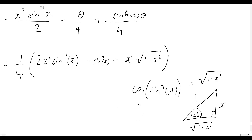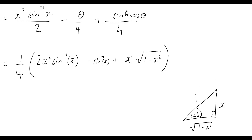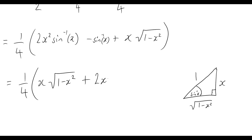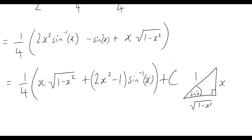Neatening up our solution, noting the common factor of sine inverse x: we get one quarter times the quantity x times the square root of one minus x squared, plus (2x squared minus one) times sine inverse of x. Since this is an indefinite integral, we add plus C. That is our final answer.